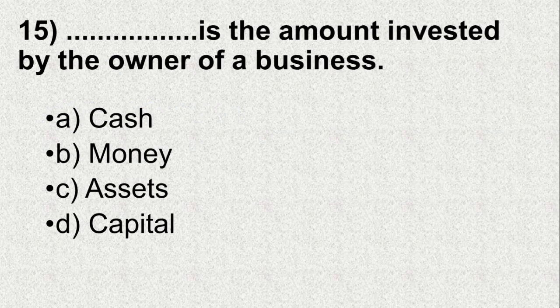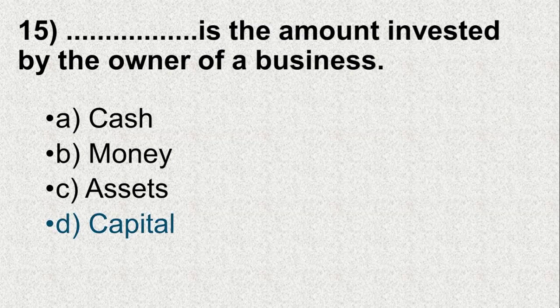Question number 15. Dash is the amount invested by the owner of a business — Option A: Cash, B: Money, C: Assets, D: Capital. And the correct answer is D, that is Capital. Thank you.